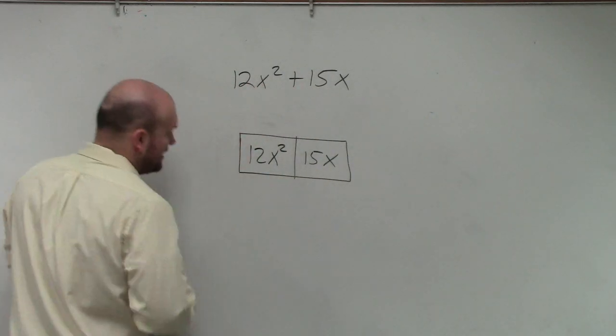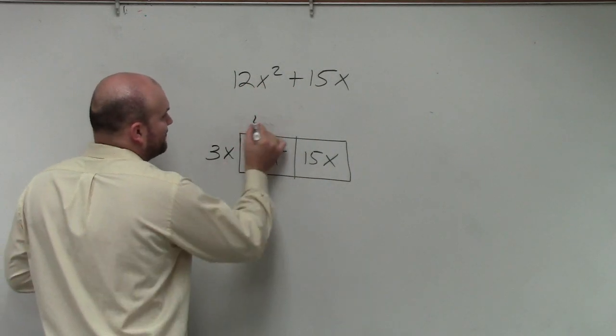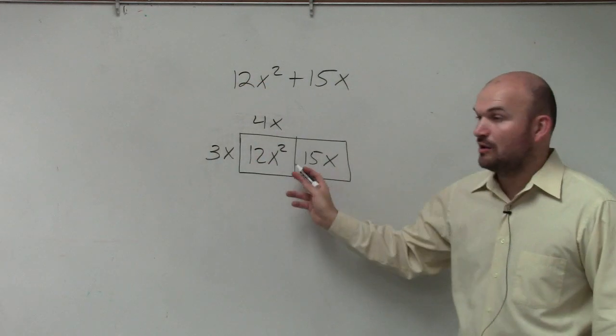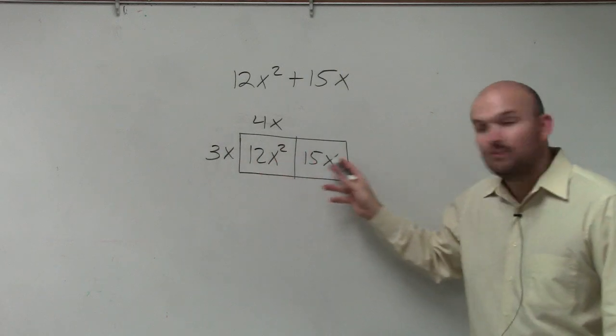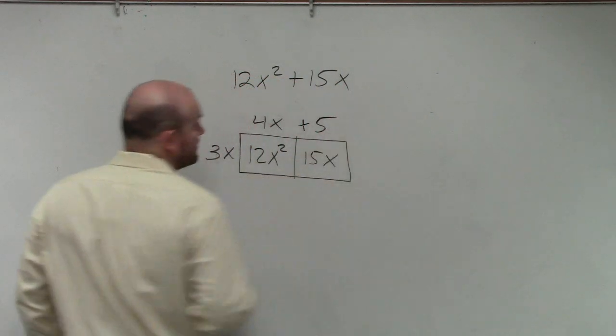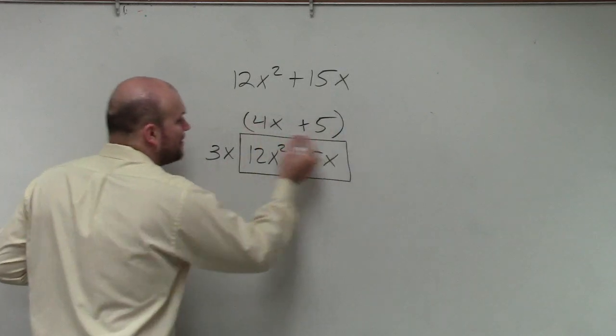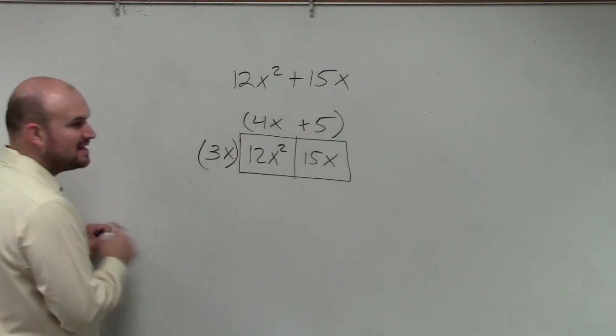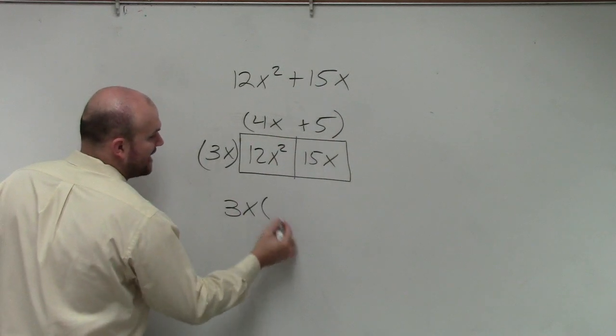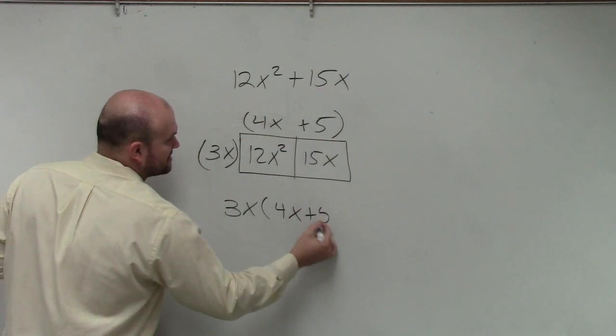if you rewrite, if you order them, 3x and 4x, now we know that 3x times 4x is 12x squared. 3x times what gives you 15x? 5. Positive 5. So therefore, those are your two side lengths. So the factored form of this is 3x times 4x plus 5.